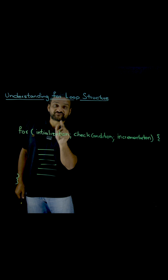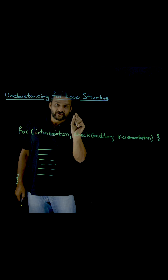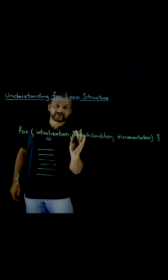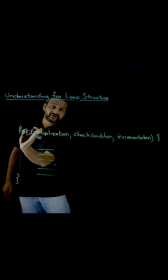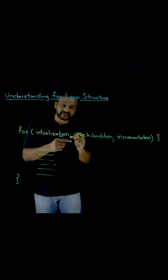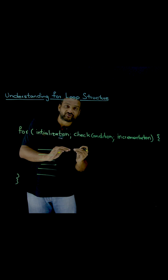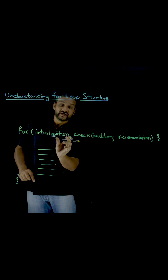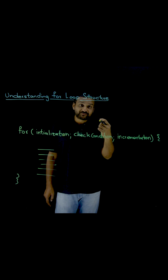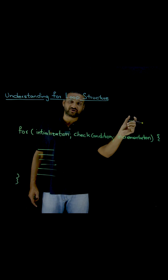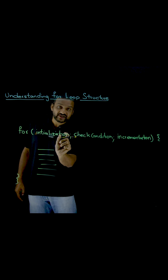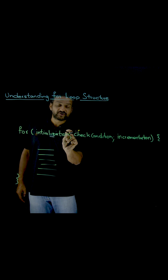Whenever the for loop gets executed for the first time, only this initialization step will get executed. After that, no matter how many times we may enter into the for loop — how many times we may repeat the code or execute the loop — this initialization part will not get executed again. The important point is the initialization part is executed only when we execute the for loop for the first time.